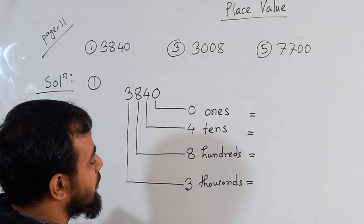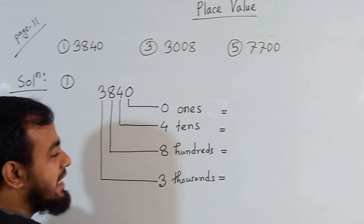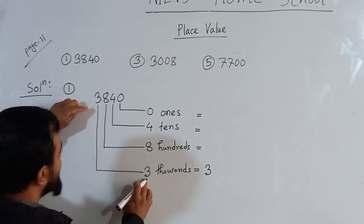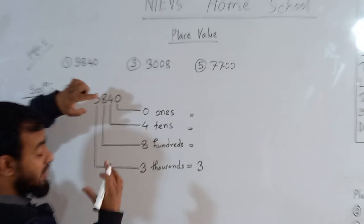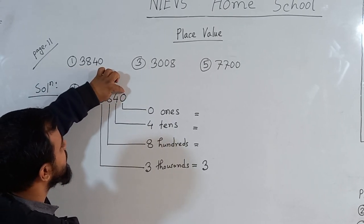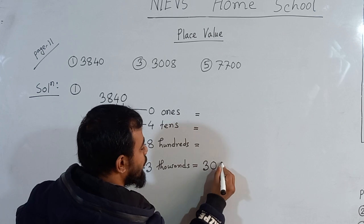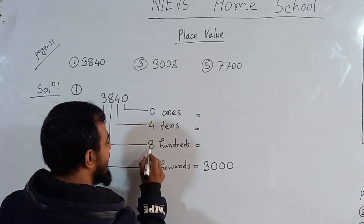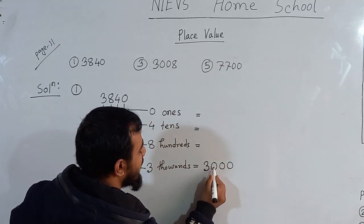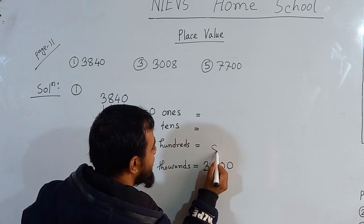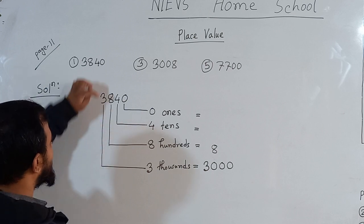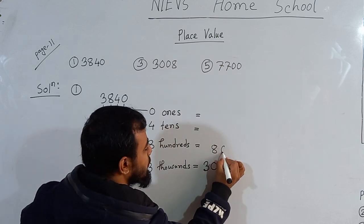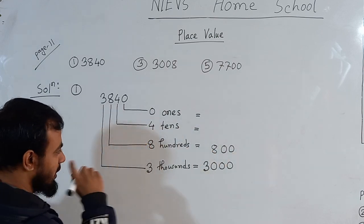We can start from the bottom because it looks very good. 3 is here, and after 3, how many digits are there? After 3 we have 1, 2, 3 digits. So we should give 3 zeros: 3000. And after 8, we should write above those zeros. After 8, how many digits are there? After 8 we have 1, 2 digits. So after 8 we write 2 zeros, making 800.